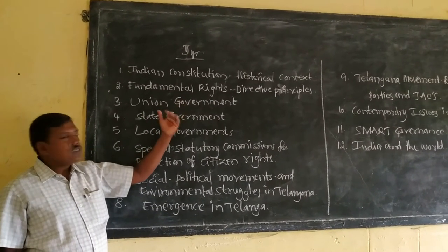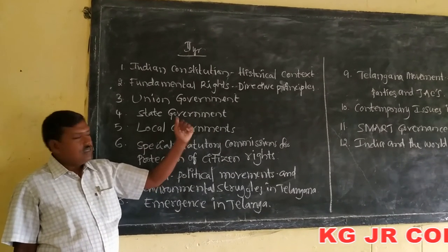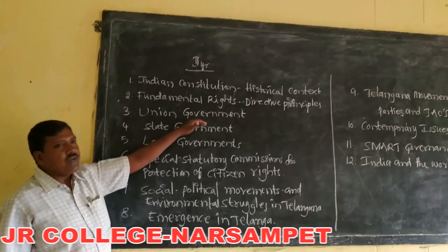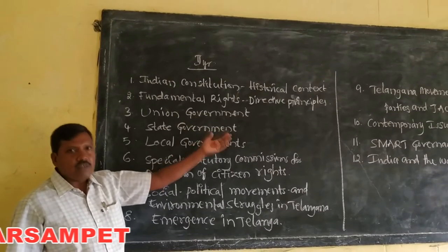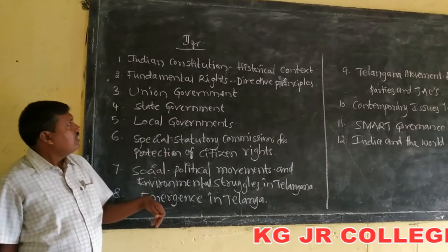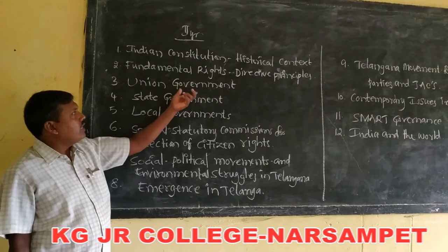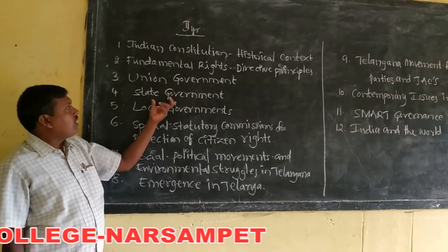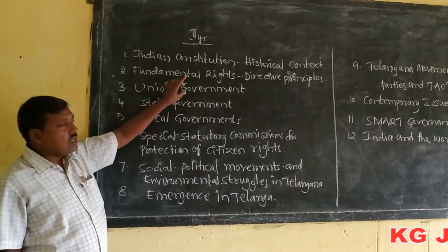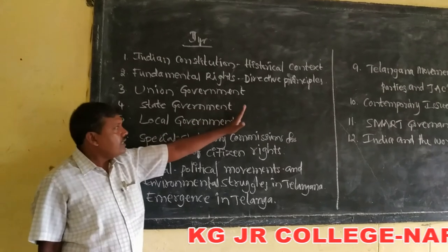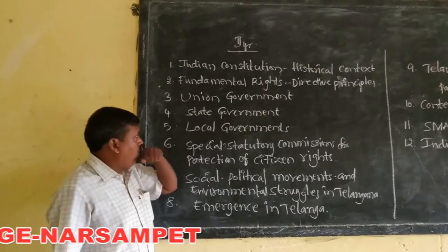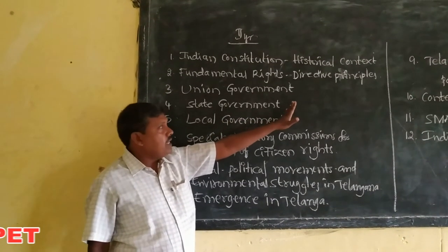Union Government means President of India, Lok Sabha, and Rajya Sabha — we will discuss all these in Union Government. Next, State Government: just as we form the Union Government at the central level, we also form the state government at the state level. Here we have the Governor, Chief Minister, Member of Legislative Assembly, and Member of Legislative Council.